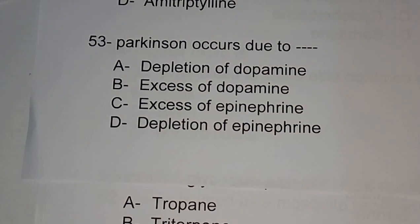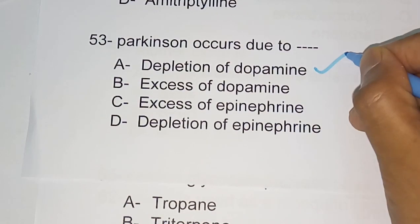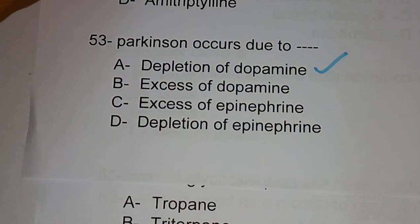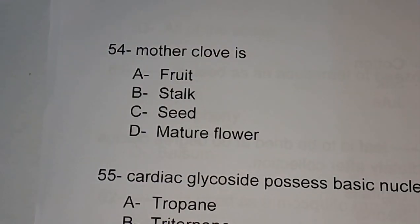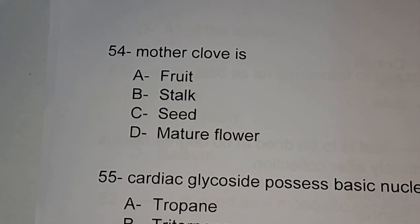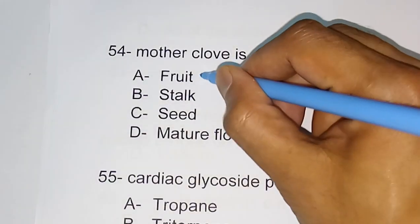Question number 53: Parkinson's disease occurs due to — depletion of dopamine, excess of dopamine, excess of epinephrine, or depletion of epinephrine. The correct answer is depletion of dopamine. Question number 54: mother clove is — fruit stalk, seed, or mature flower. The correct answer is fruit.